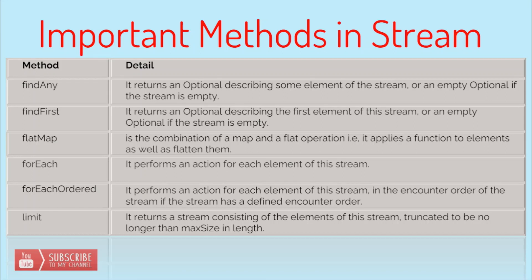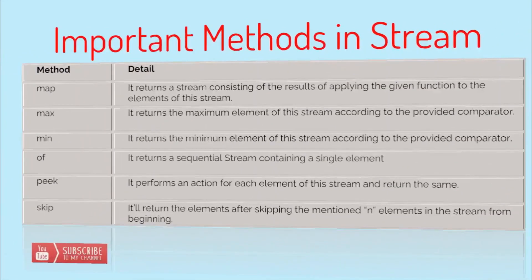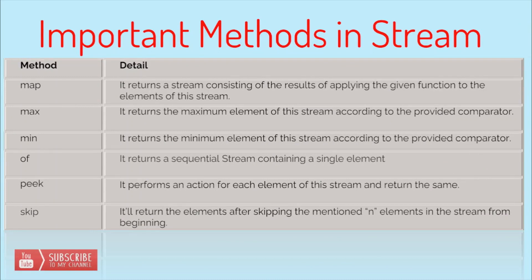forEach performs an action for each element of the stream. forEachOrdered performs a similar action but in the encounter order of the stream, if an encounter order is defined. limit returns a stream truncated based on the number provided — for example, while generating an infinite stream we used limit(5) so that only 5 elements are returned.